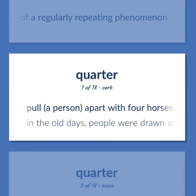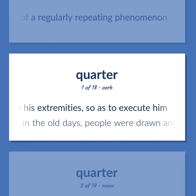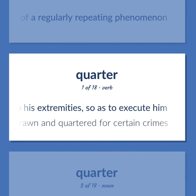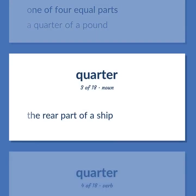Quarter: Pull a person with four horses tied to his extremities so as to execute him — in the old days, people were drawn and quartered for certain crimes. One of four equal parts — a quarter of a pound. The rear part of a ship.